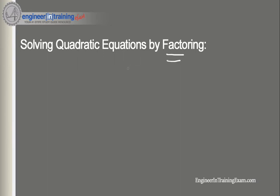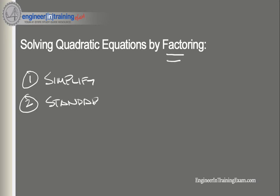A quadratic equation can be solved by factoring if, after writing the equation in its standard form, the quadratic expression factors. This process can be done in four steps. Step one: given an equation, simplify it — remove any parentheses or division and combine like terms. Step two: get the equation into standard form, ax squared plus bx plus c equals zero. Step three: factor.